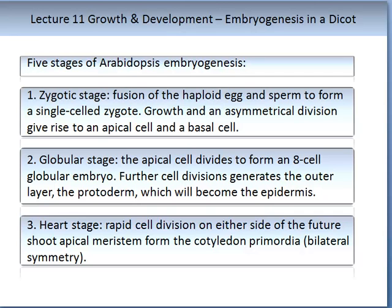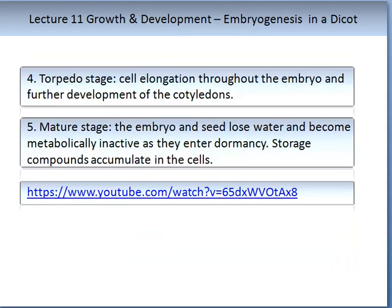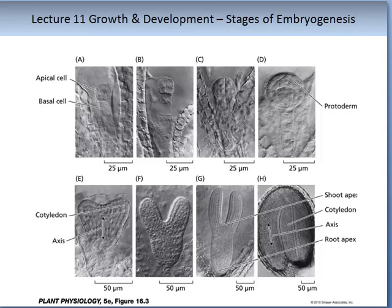The third stage is the heart stage, where rapid cell division occurs on either side of the future shoot apical meristem from the cotyledon primordia. The fourth stage is the torpedo stage, involving cell elongation throughout the embryo and further development of the cotyledons. The fifth and final stage is the mature stage, where the embryo and seed lose water and become metabolically inactive as they enter dormancy, and storage compounds accumulate in these cells. For a visualisation of embryogenesis in Arabidopsis, please stop the video and click on the link provided, which will also be available on Moodle.